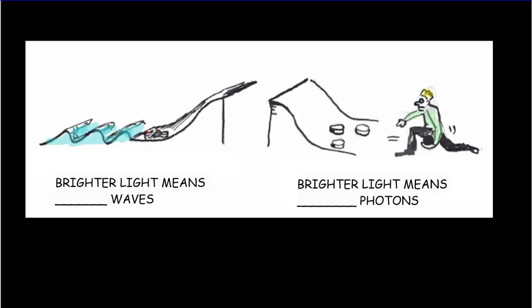We can think of waves coming in and hitting pucks on a ramp, as compared to balls being thrown and hitting pucks on the ramp. The waves would gradually push the pucks up and make them drop off the ramp — a gradual transfer of energy. If we're talking about a brighter light coming in, that means bigger waves with larger amplitude. So if we have brighter light, we expect it'll take less time to emit the electrons and they'll probably be fired out with a little more kinetic energy.